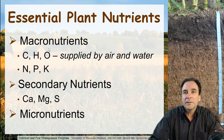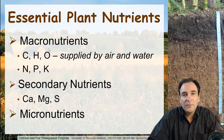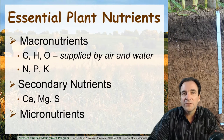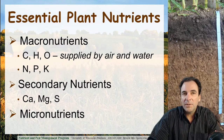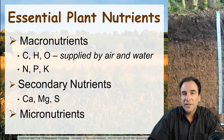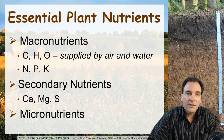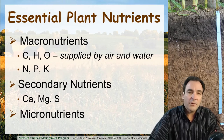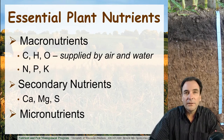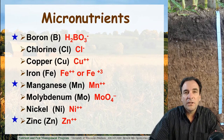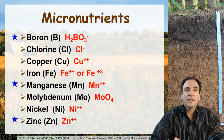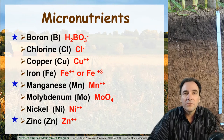You'll remember from the earlier presentations that we classify soil nutrients in three general terms: the macronutrients — N, P, and K, carbon, hydrogen, and oxygen — the secondary nutrients — calcium, magnesium, and sulfur — and now we're going to discuss the third category, which is the soil micronutrients.